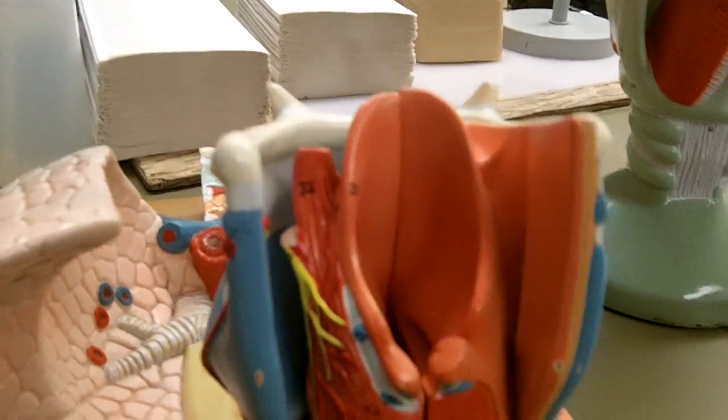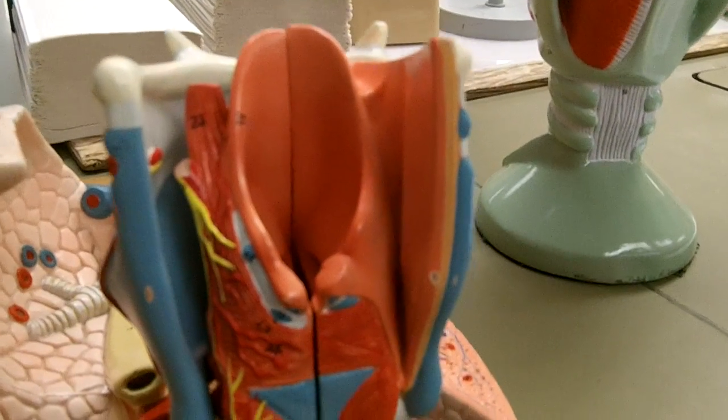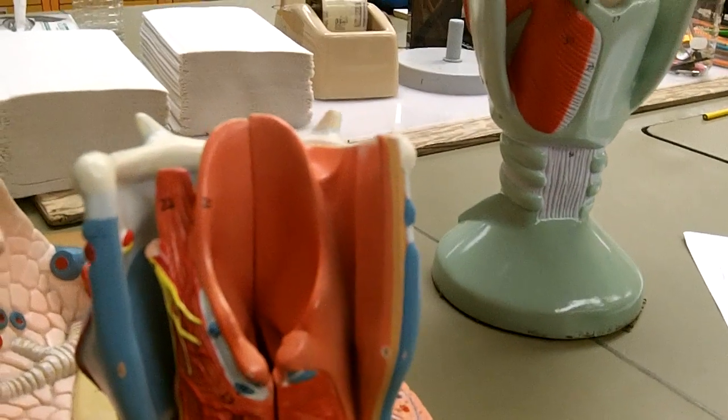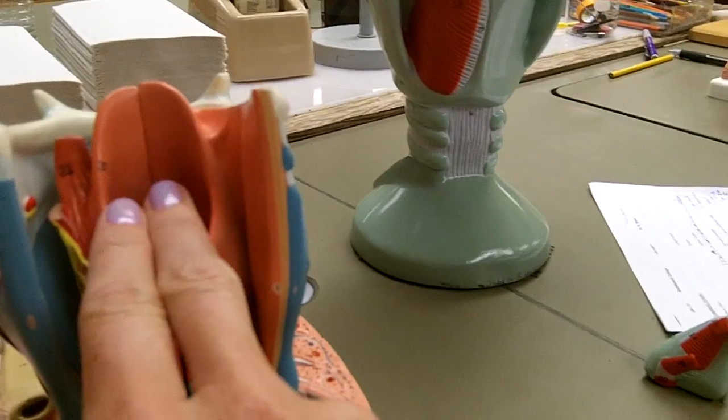The epiglottis right there. And its purpose, when you swallow, the muscles around the larynx help pull your larynx superiorly, and the epiglottis folds over and covers the glottis.